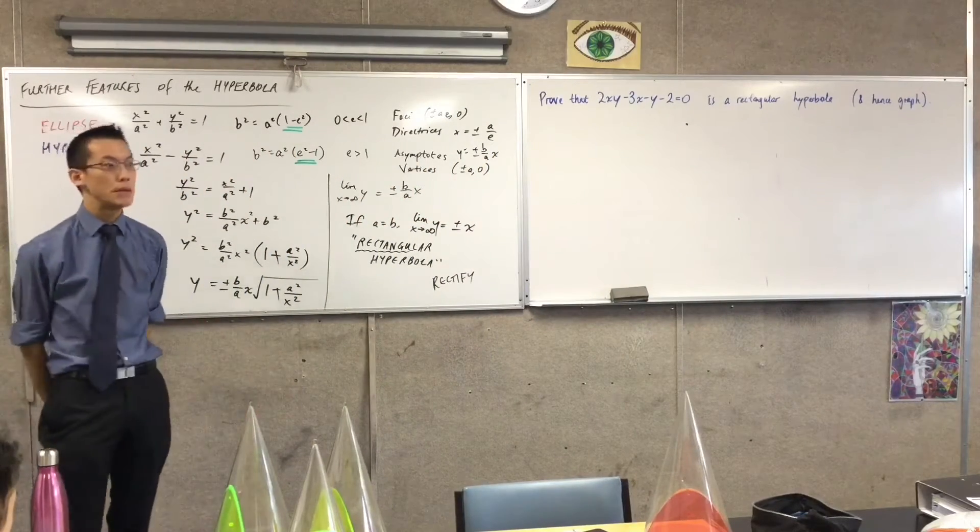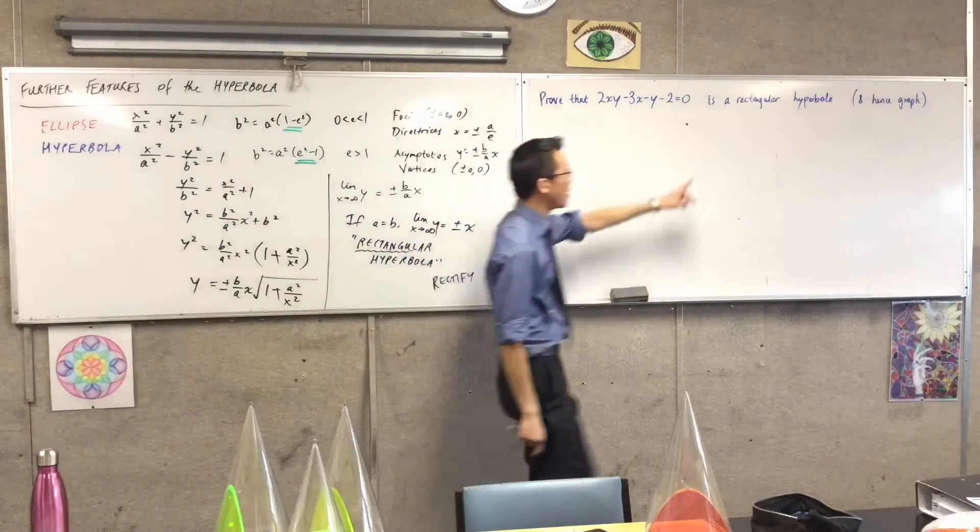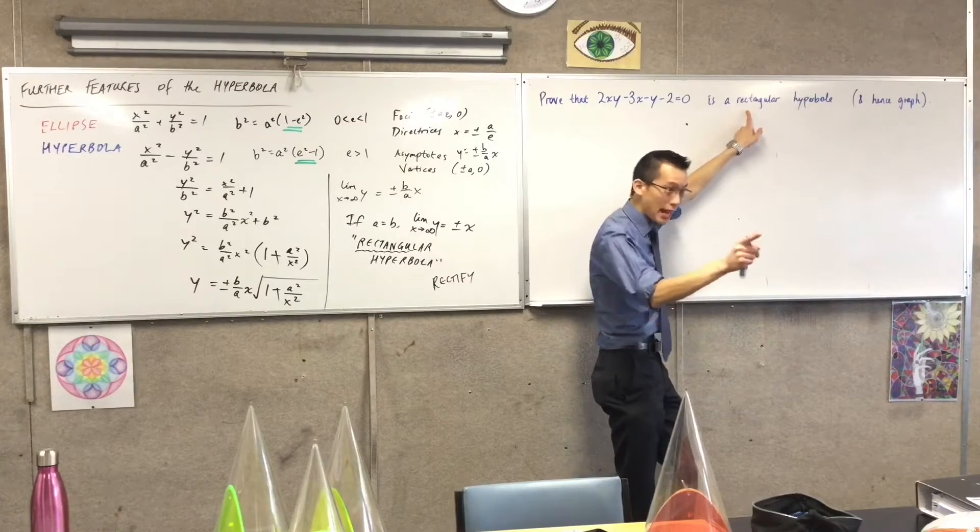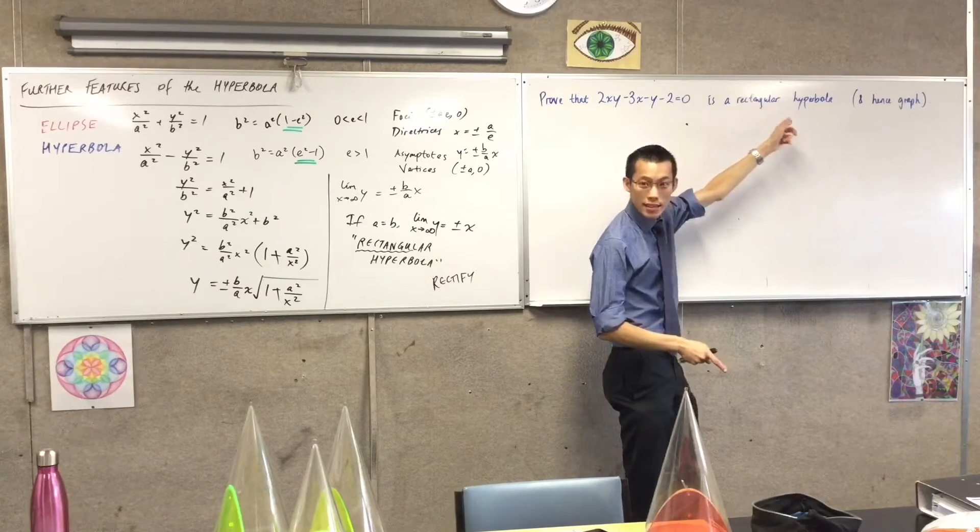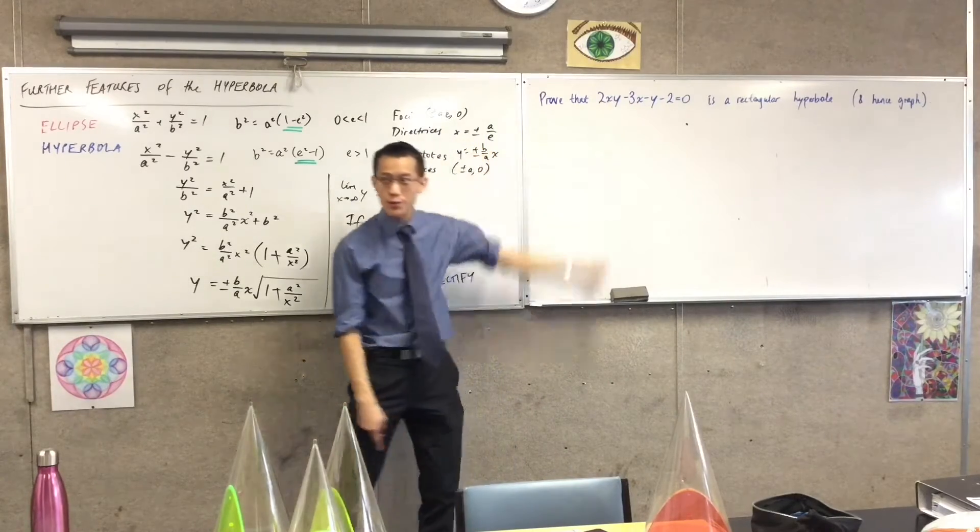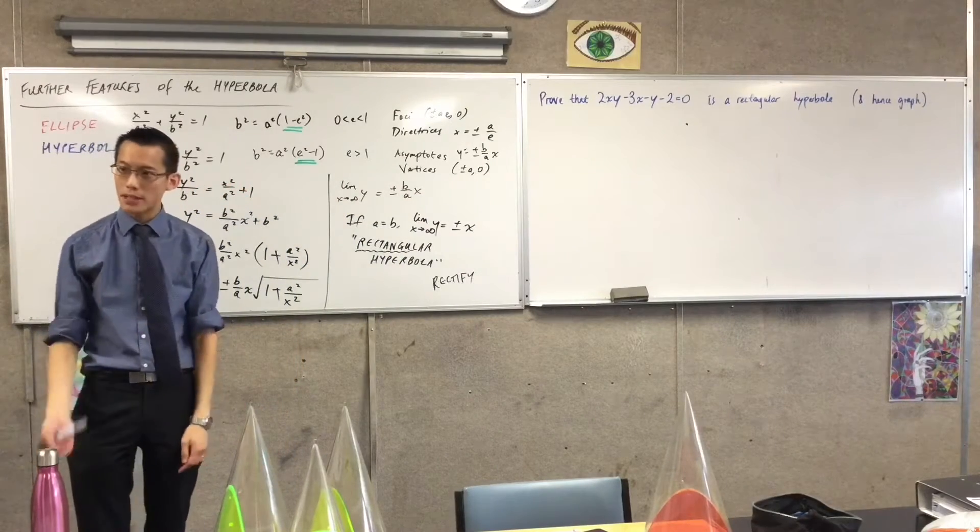What does it mean for a hyperbola to be rectangular? What defines that? It comes to the name - rectangular, what's at right angles? The asymptotes. So I need to understand something about the asymptotes of this, and that will enable me to prove that the hyperbola is rectangular. How do I go about doing that?